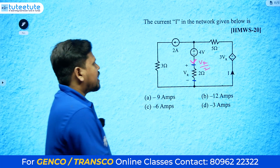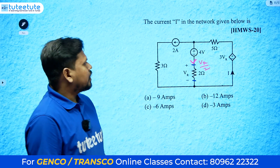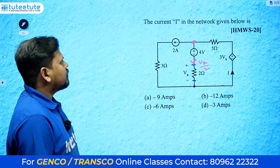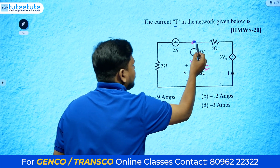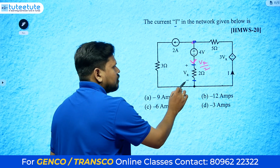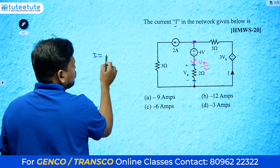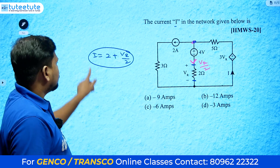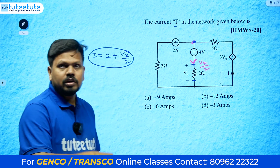We have current vr/2 in the 2-ohm branch, 2 amperes from an independent source, and current i at the node. Applying KCL: i equals 2 plus vr/2. We now have one equation with two unknowns. We need another relation — either loop or node analysis. Since a current source is present, we cannot write a direct loop voltage equation through it.